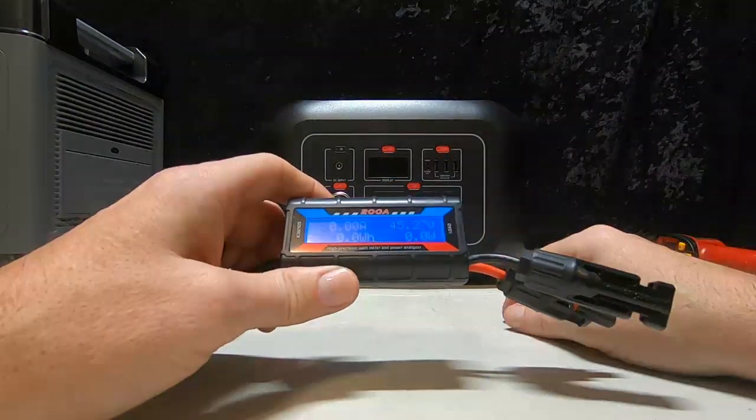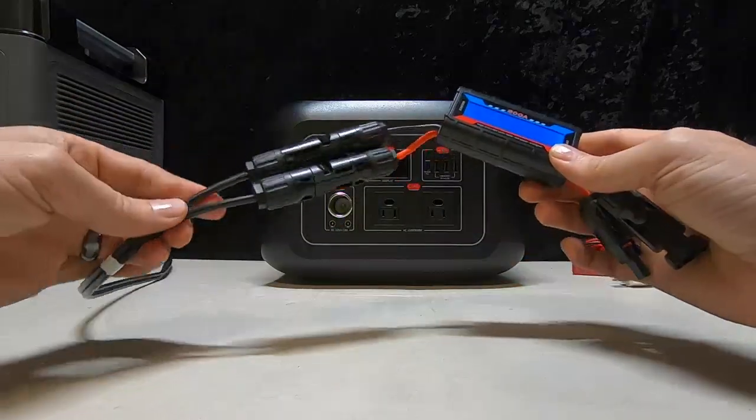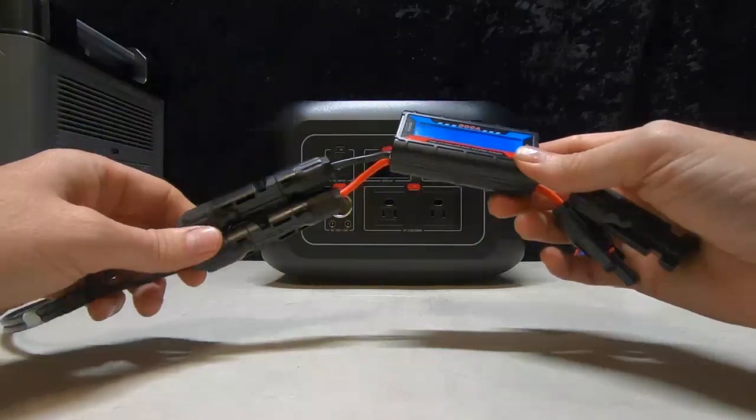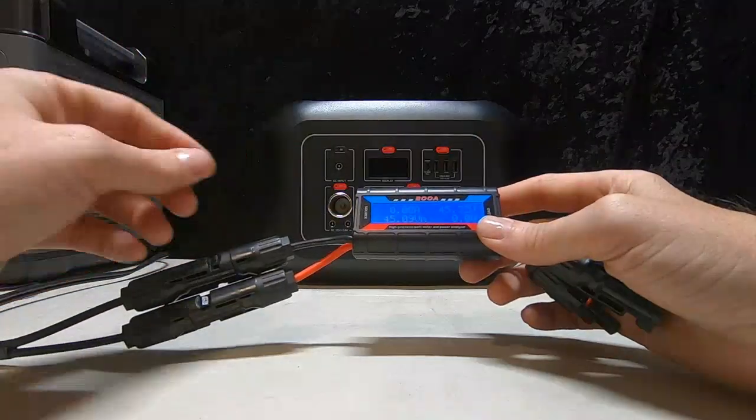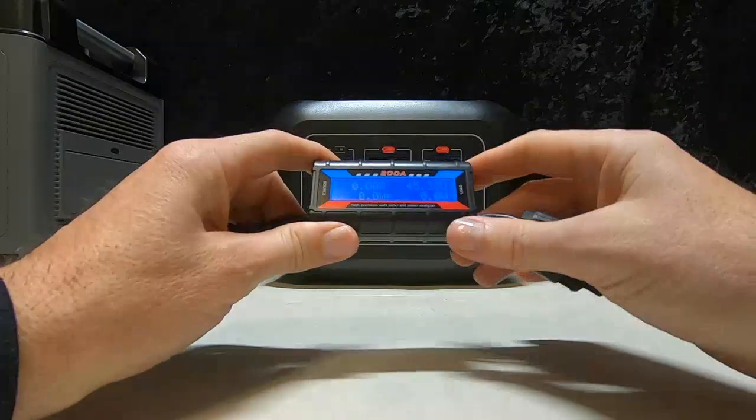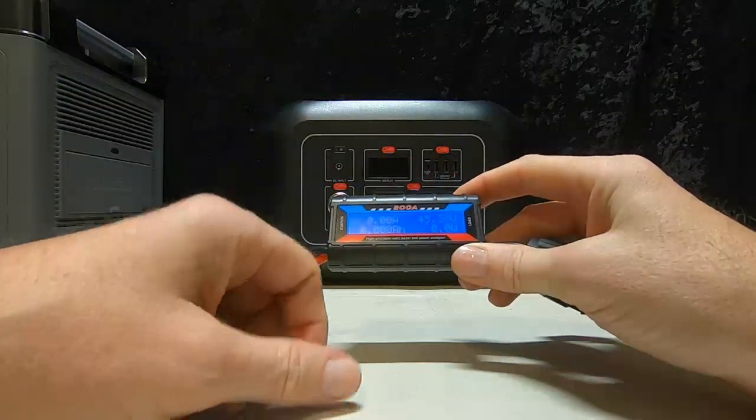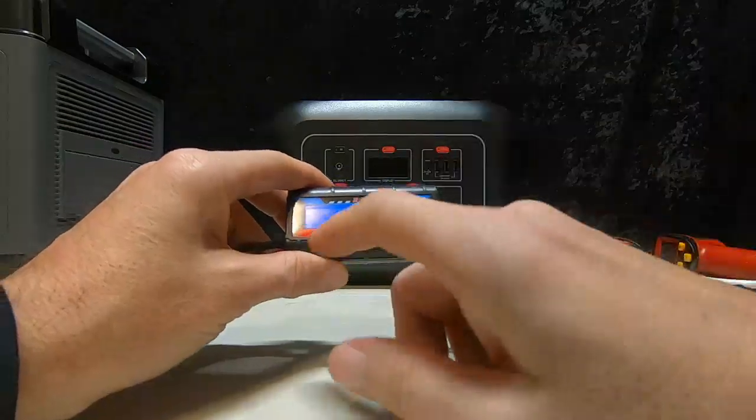This is a real nice way to make sure - like say you bought a used solar panel at a rummage sale or something and the sticker's old, it fell off, and you have no idea what the voltage is. Now you can write it all down. You know exactly what the open voltage is, the operating voltage, and then once you use it, it'll keep track of your amp hours, your watt hours, your peaks.